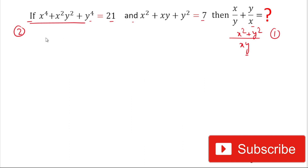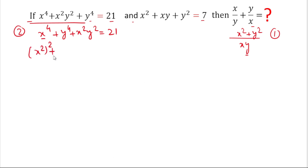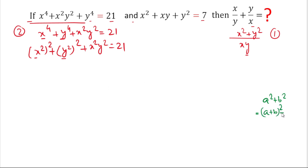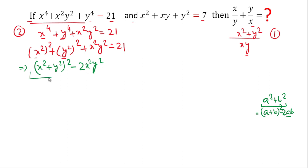In the second step, we'll work with the expression x⁴ + x²y² + y⁴ = 21. We can write x⁴ as (x²)² and y⁴ as (y²)², plus x²y² = 21. This is in the form a² + b², and using the formula a² + b² = (a+b)² - 2ab, we rewrite it as (x² + y²)² - 2x²y² + x²y² = 21.